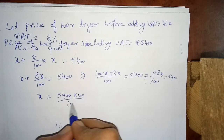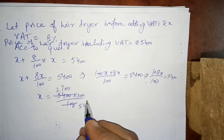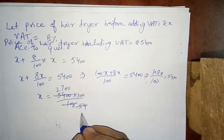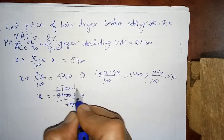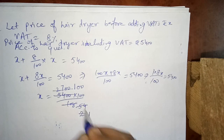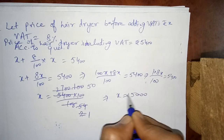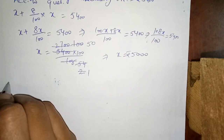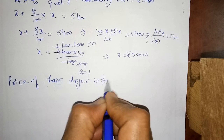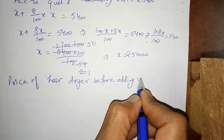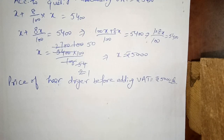100 multiplies across and 108 divides: x equals 5,400 multiplied by 100 divided by 108. We can simplify by 27: this gives x equals Rs. 5,000. So the price of the hair dryer before VAT was Rs. 5,000. This is the answer of this question.